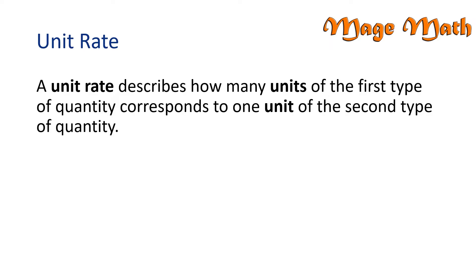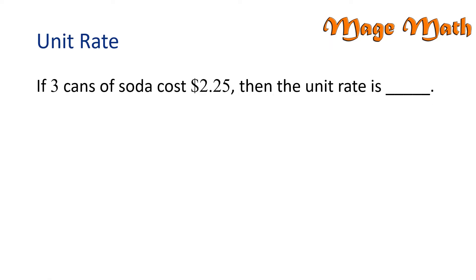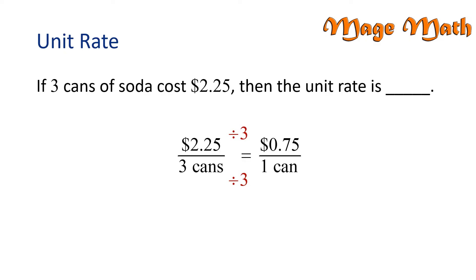Let's look at an example. If three cans of soda cost $2.25, then the unit rate is blank. Remember, a unit rate is the rate or amount per one unit. So in this problem, one unit is one can of soda. We can write the ratio of $2.25 over three cans of soda. Notice we can divide $2.25 by three. This gives us $0.75 per one can. The unit rate is $0.75 per can.